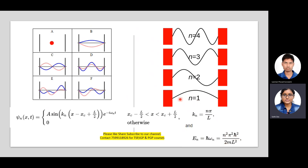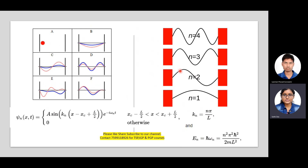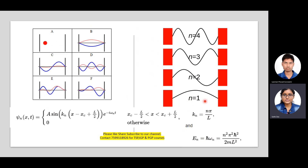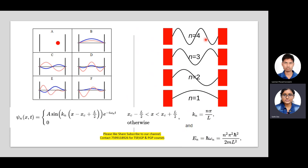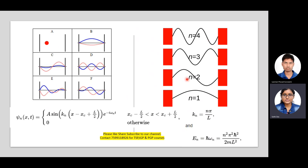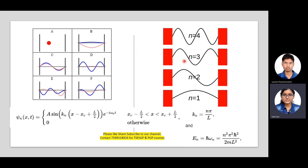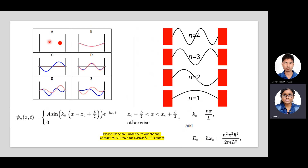As you go to higher states, the particle's energy increases. From the wave perspective, a wave with greater energy has a lower wavelength. So for n = 1 the wavelength is highest, and for n = 2, 3, 4 it decreases gradually. The particle is represented by the wave function, associated with the de Broglie wave — going from ground state to higher excited states, the wavelength decreases and frequency increases.